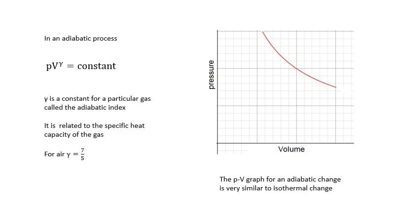For air, gamma is 1.4. You'd be given a value in the exam. So the graph is very, very similar - it looks like an isothermal graph, but it is slightly different. So the pV graph for an adiabatic change is very similar to an isothermal change, and pV to the gamma equals a constant.